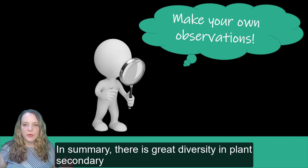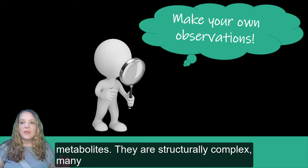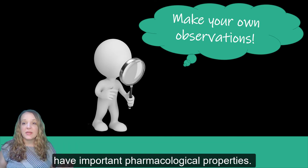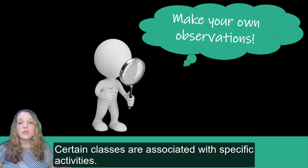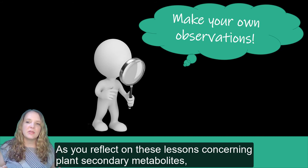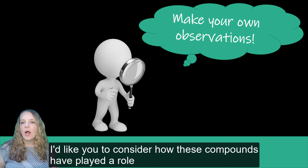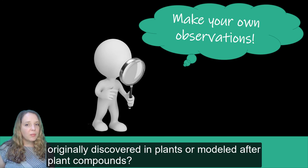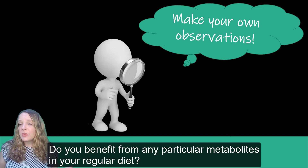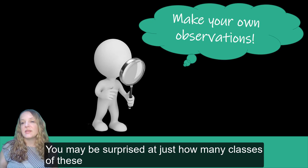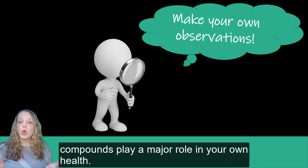In summary, there is great diversity in plant secondary metabolites. They are structurally complex, and many have important pharmacological properties, and certain classes are associated with certain types of activities. As you reflect on these lessons concerning plant secondary metabolites, I'd like you to consider how these compounds have played a role in your own health. Do you take any medications originally discovered in plants or modeled after plant compounds? Or do you benefit from any particular metabolites in your regular diet? You may be surprised at just how many classes of these compounds play a major role in your own health.